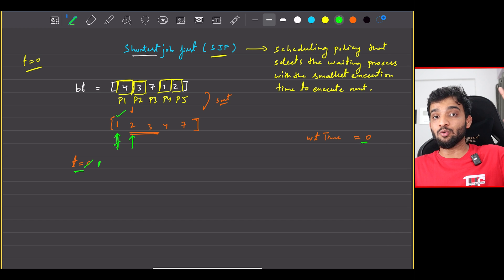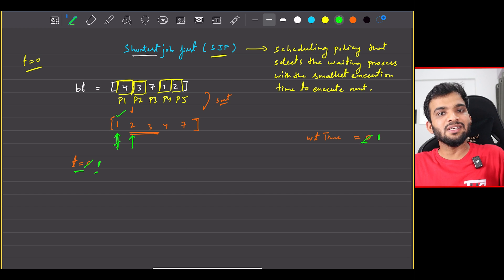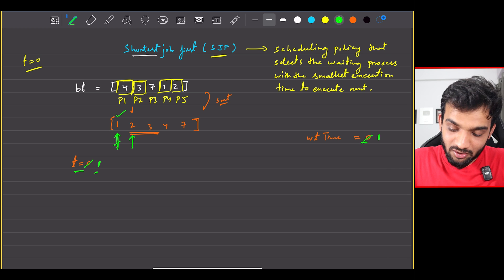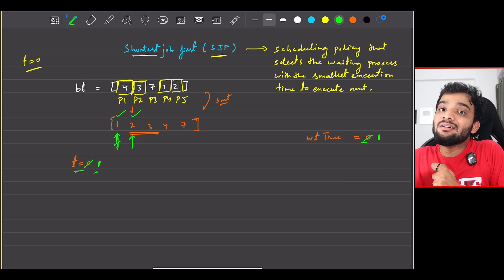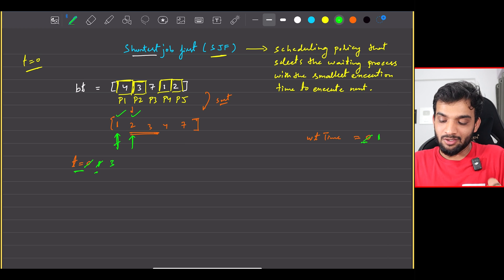And then we go to the next one. When I go to the next one, it's taking time 2. I start at time 1, so the waiting time is 0 plus 1, because this guy is taking 1, so I just add up 1 to it. Perfect. It's gonna complete at 1 plus 2, that's 3. Done.